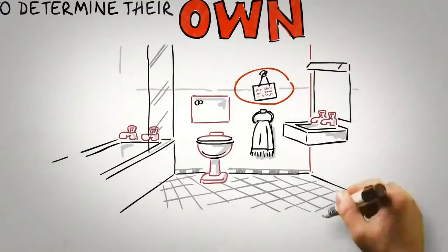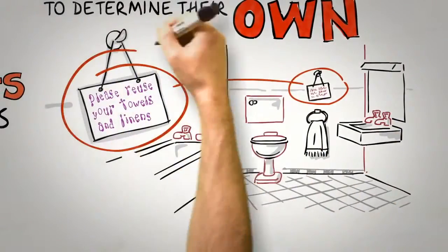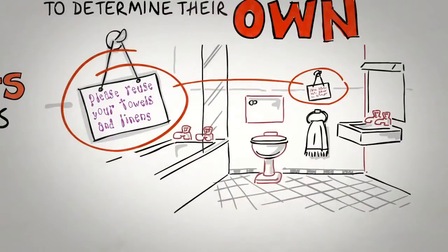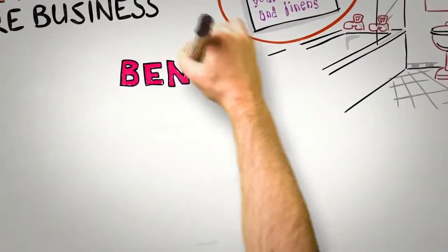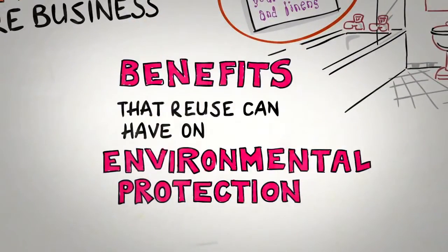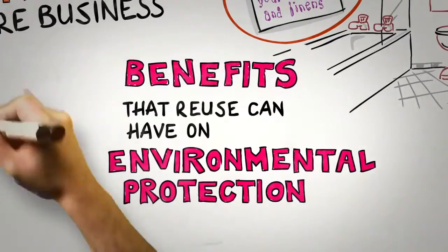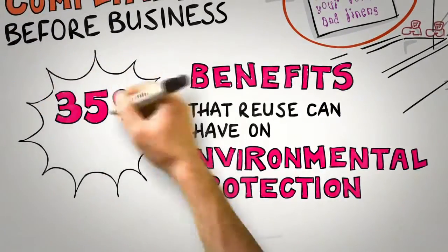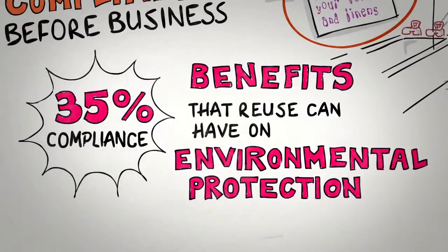You may have noticed that hotels often place a small card in bathrooms that attempt to persuade guests to reuse their towels and linen. Most do this by drawing a guest's attention to the benefits that reuse can have on environmental protection. It turns out that this is a pretty effective strategy, leading to around 35% compliance. But could there be an even more effective way?